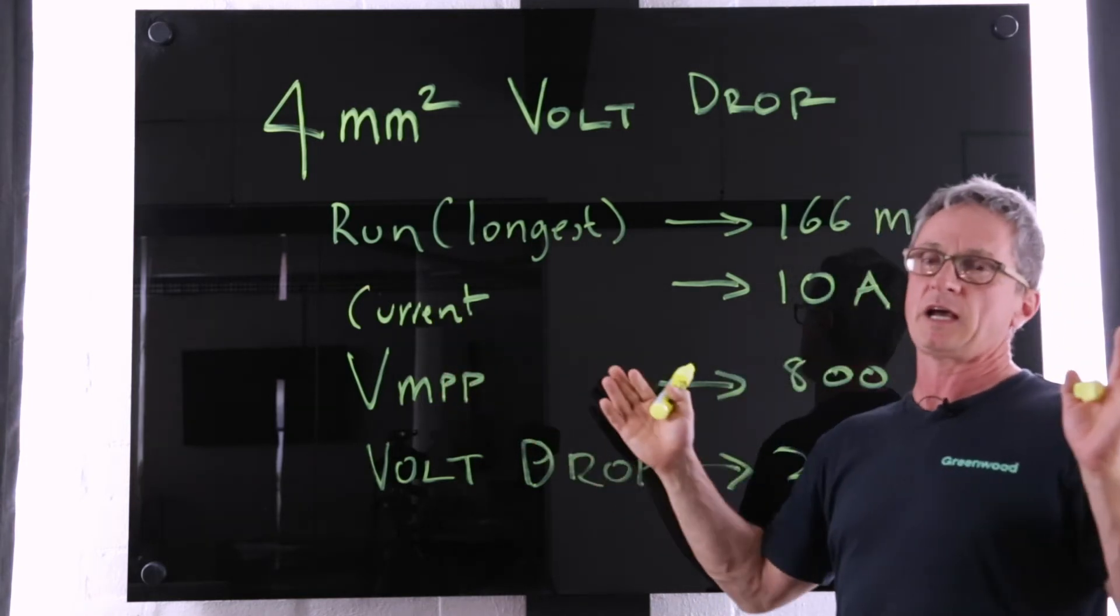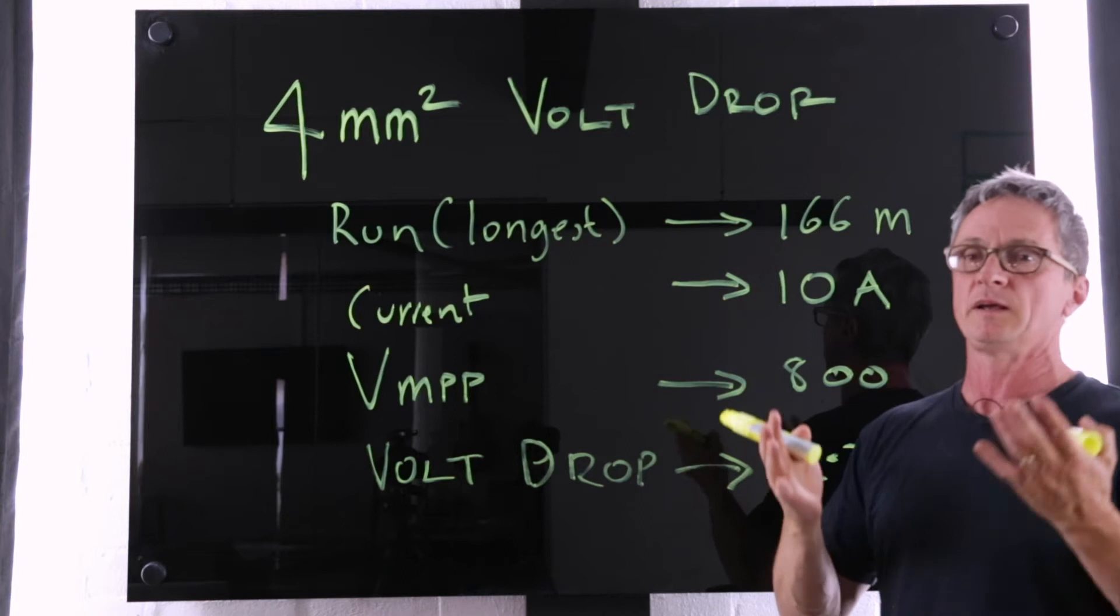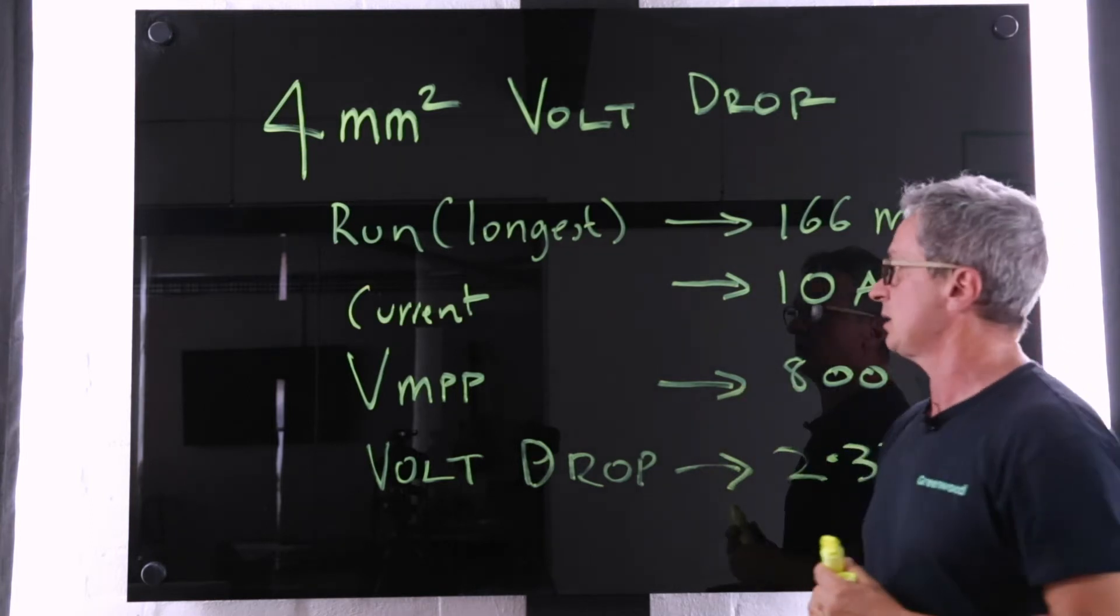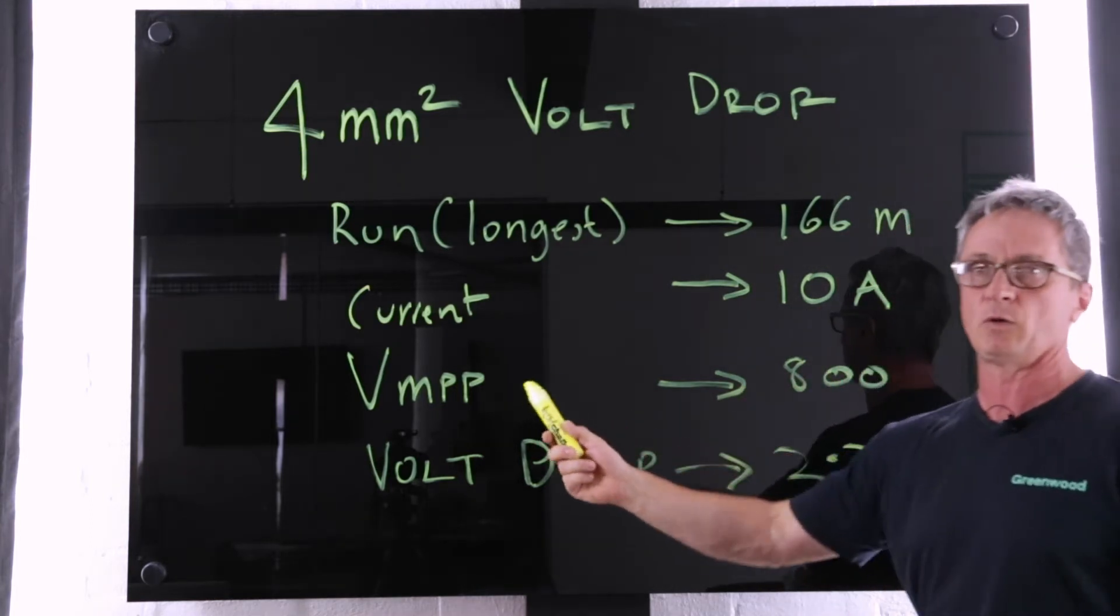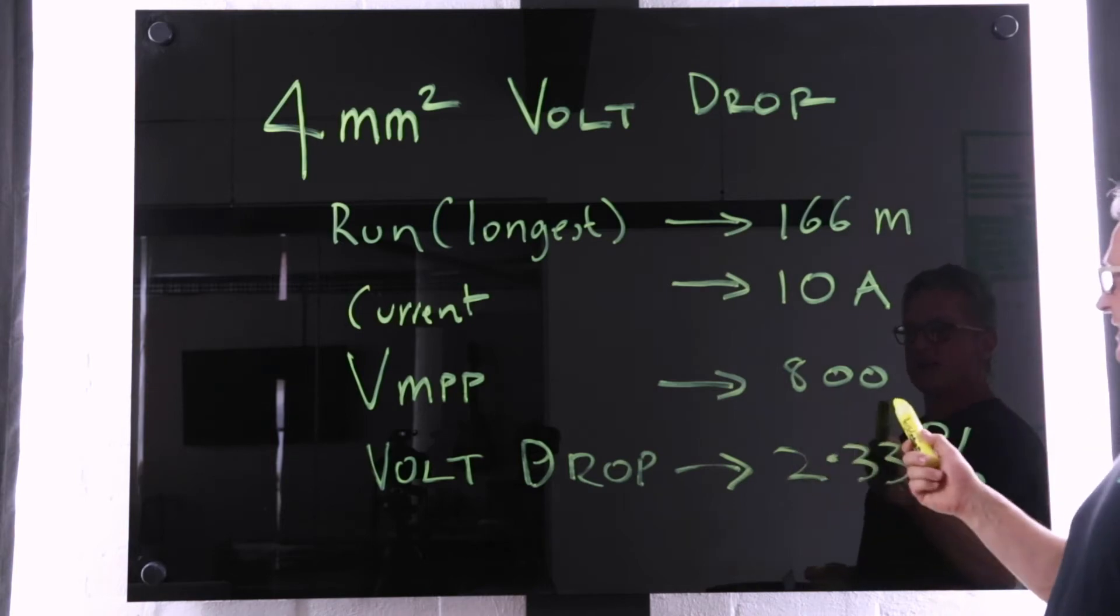The current, we're talking a non-paralleled string, it's 10 amps for this particular panel and we're assuming a voltage at maximum power point of 800 volts.